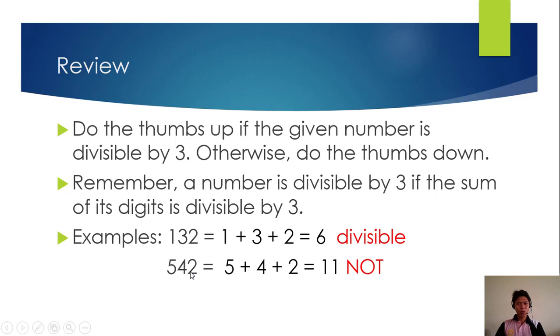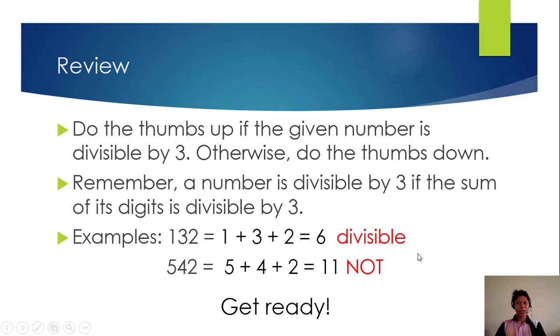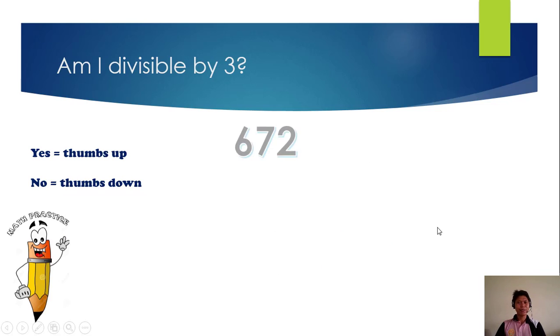542. 5 plus 4 is 9 plus 2 is equal to 11. 11 is not divisible by 3, therefore 542 is not divisible by 3. Thumbs down. Are you ready? Let's start.